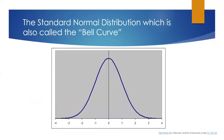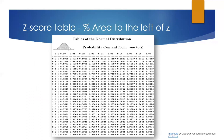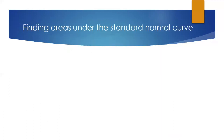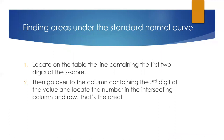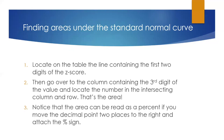The standard normal distribution is also called the bell curve, and you can see that it looks a little bit like a bell. We can find the area under the curve for a given z-score using common tables. This table shows the percent of the area to the left of z. To find areas under the standard normal curve, we first locate on the table the line containing the first two digits of the z-score, then go over to the column containing the third digit of the value and locate the number in the intersecting column and row. That's the area under the curve to the left of that value of z. Notice that the area can be read as a percent if you move the decimal point two places to the right and attach the percent sign.